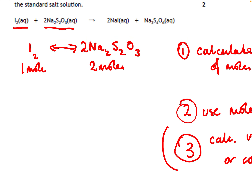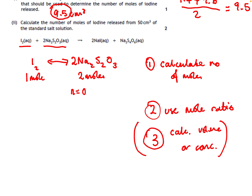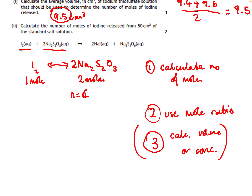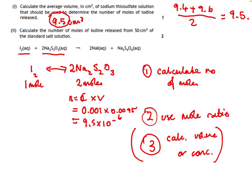We know the concentration of the sodium thiosulfate is 0.001. Let's do n = cv: the concentration is 0.001 and the volume is 9.5 cm³, which we convert to litres as 0.0095. When you put that into your calculator you get 9.5 × 10⁻⁶.